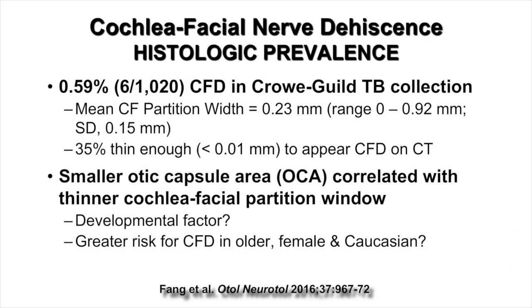Three studies examined the relative prevalence of cochlea facial nerve dehiscence. First, a study from Johns Hopkins Hospital using histologic studies of human temporal bones found 6 out of 1,020 temporal bones had cochlea facial nerve dehiscence. However, 35% were thin enough — less than 0.01 millimeters — to appear as a dehiscence on CT scan. They observed that a smaller otic capsule area correlated with a thinner cochlea facial partition, raising the question of whether this was a developmental factor placing greater risk in older female and Caucasian patients.